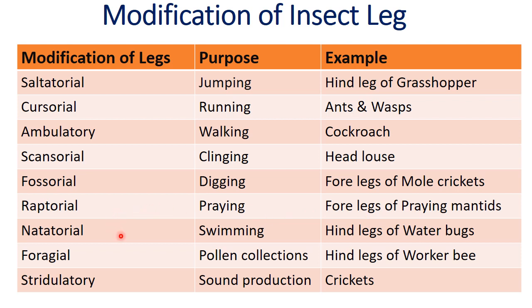Natatorial legs serve a swimming purpose — example is the hind legs of water bugs. Corbicular legs serve a pollen collection purpose — the example is the hind legs of worker bees. Stridulatory legs serve a sound production purpose — examples are crickets. Thanks everyone.